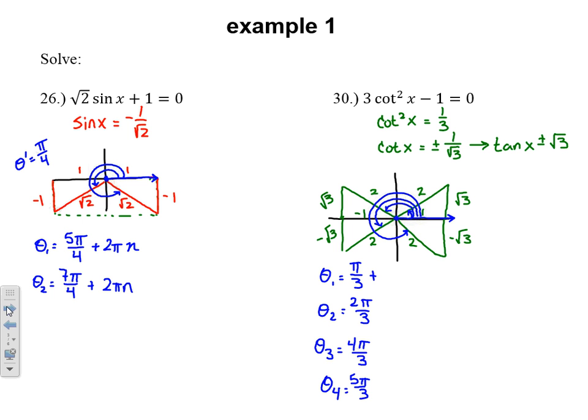In each case, they haven't limited us to one full circle. So any coterminal angle can also be added, plus 2πn. And we have that.